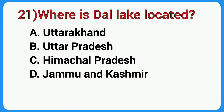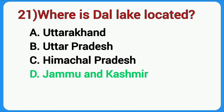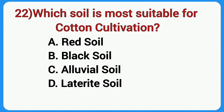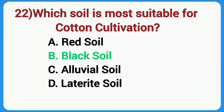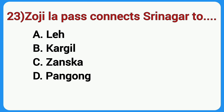Where is Dal Lake located? Answer is Jammu and Kashmir. Which soil is most suitable for cotton cultivation? Answer is Black soil. Zojila Pass connects Srinagar to? Answer is Leh.